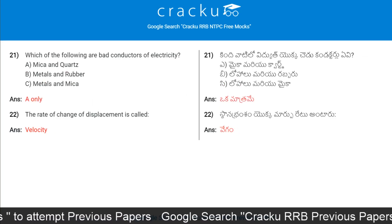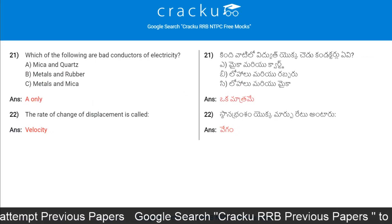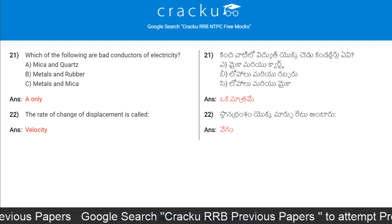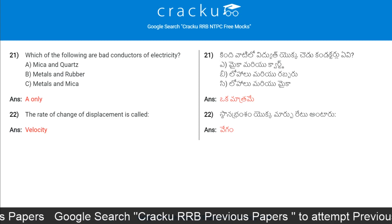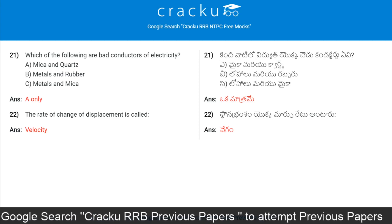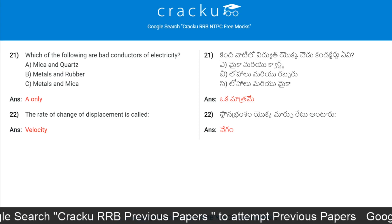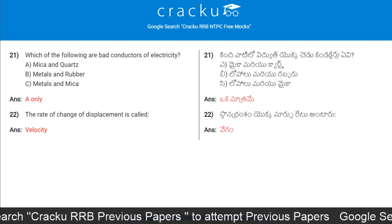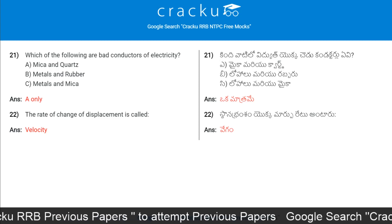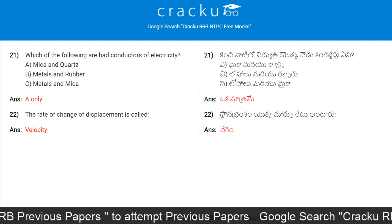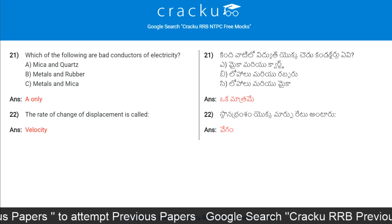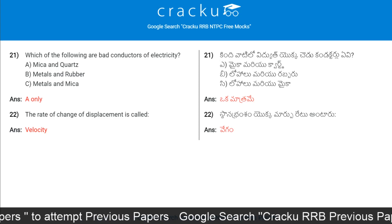Which of the following are bad conductors of electricity? Option A is mica and quartz, option B is metals and rubber, option C is metals and mica. The answer is only A — mica and quartz.